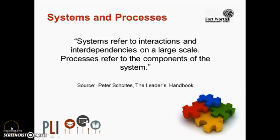Before we move on, let's look at the relationships between systems and processes. Systems refer to interactions and interdependencies on a large scale, while processes refer to the components of the system. If we consider the campus system, we can identify the processes that support its effective operation. This system of interrelated processes is important to understand because changes in one process can impact other processes. Processes within the system can involve multiple customers, both internal and external, making it critical to involve all key players in process development or redesign.